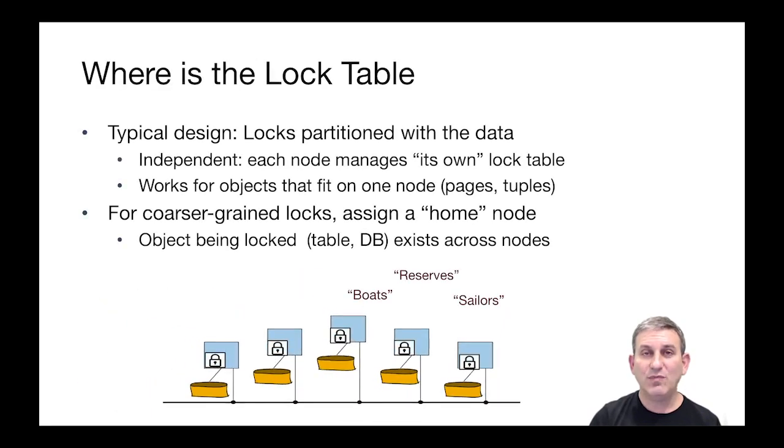So where is the lock table in a distributed database system? In a typical design, the locks live on the same computer as the data that they represent, so the locks are partitioned with the data. This makes every node roughly independent. Each node manages its own lock table for its own data. This works well for objects that fit on a single computer, like a page or a tuple.